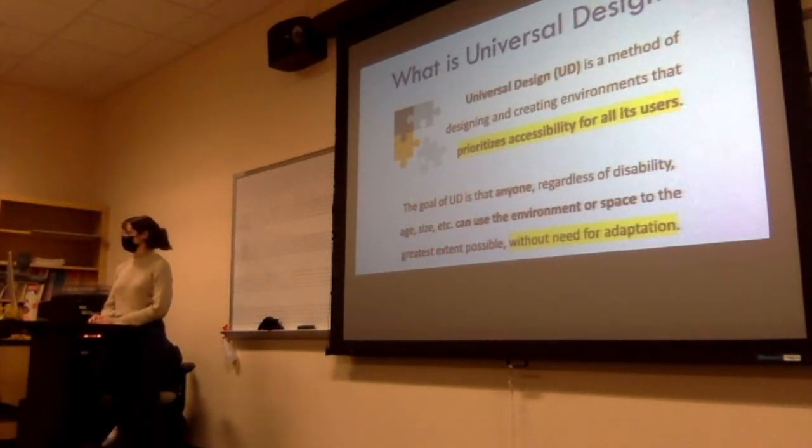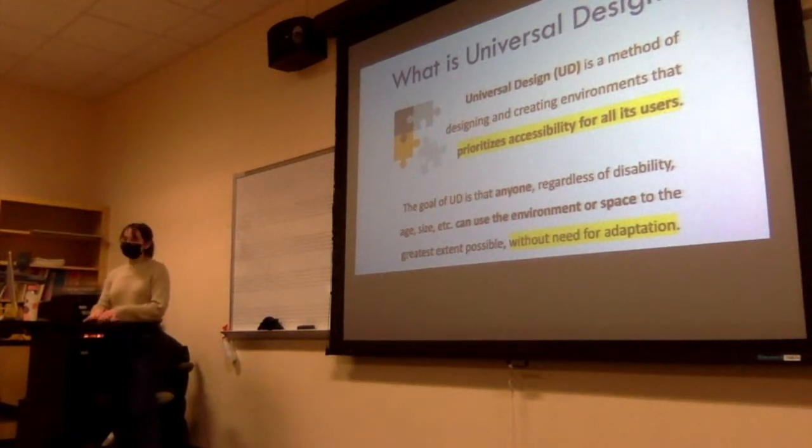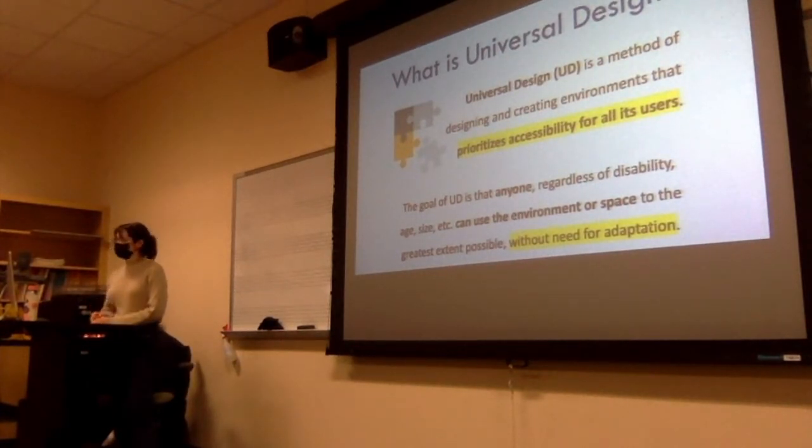So what even is universal design? I'll refer to it as UD, universal design. It's a method of designing and creating environments that prioritizes accessibility for all users. If something is accessible, anyone can easily engage with it. The goal of UD is that anyone, regardless of disability, age, size, or language, can use the environment or space to the greatest extent possible without need for adaptation.